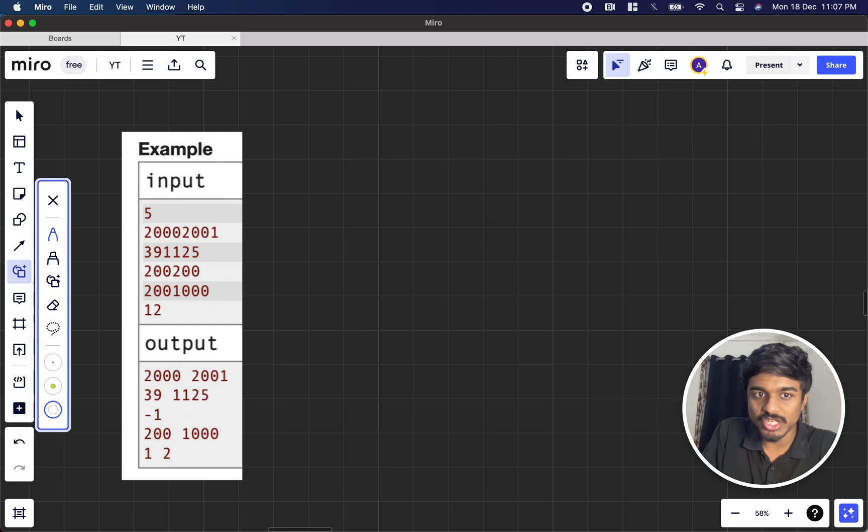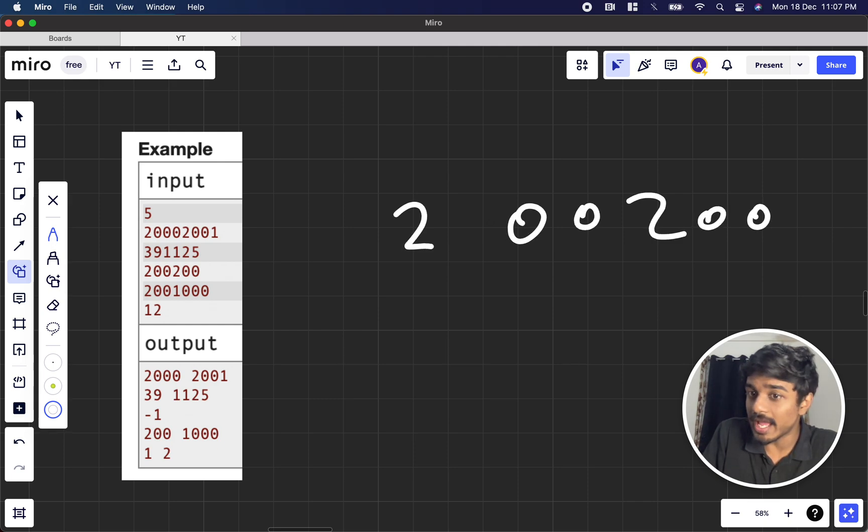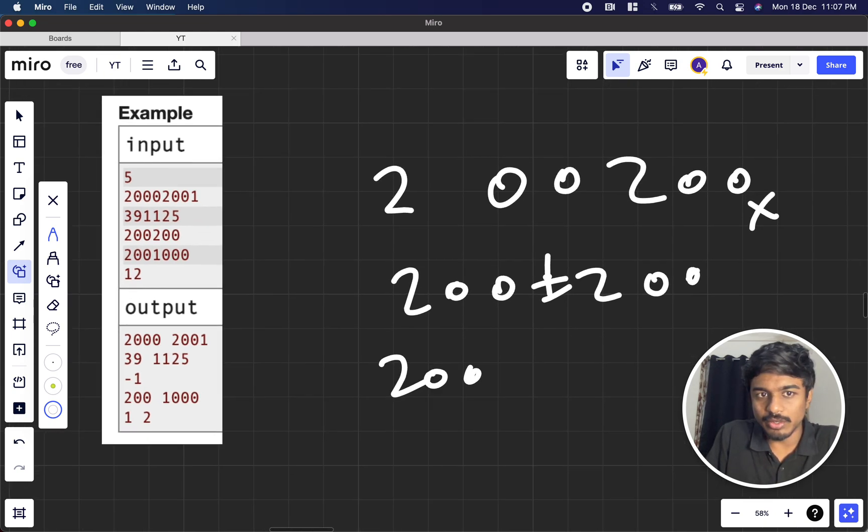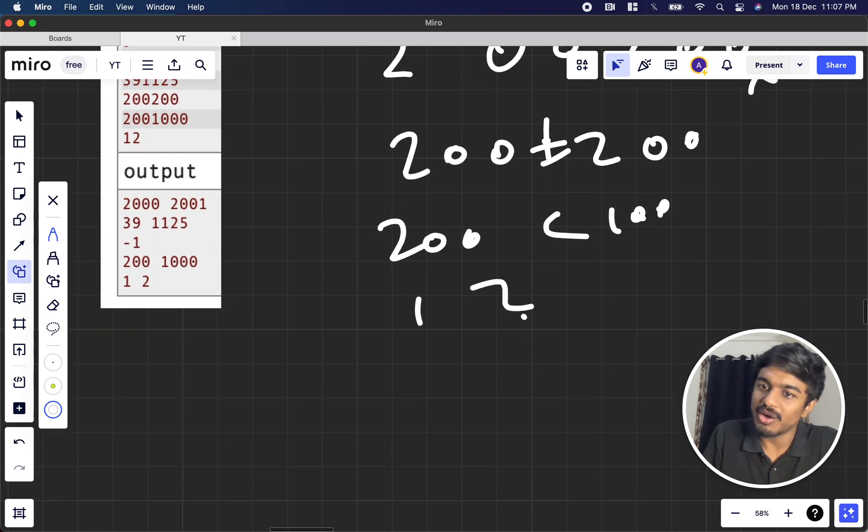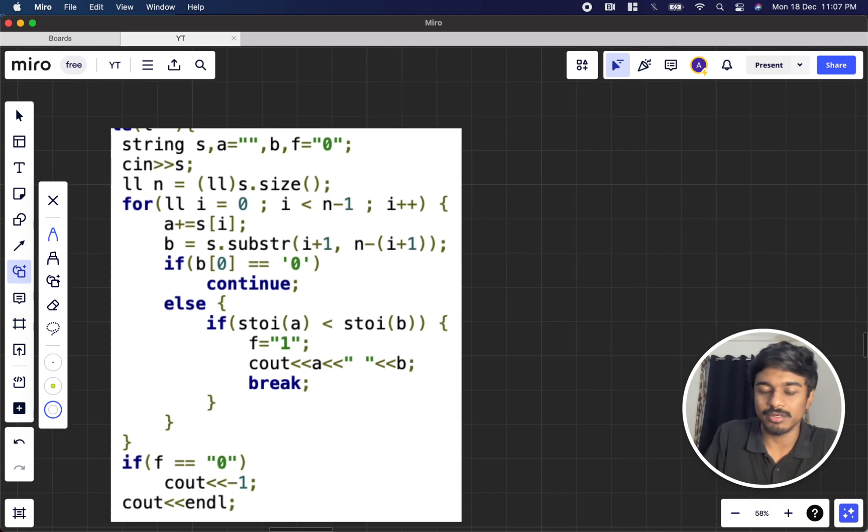How do you split it? You can split straight away here. For 39 1125, you can do 39 and 1125 as a possible answer. 200 200 you can never split, right? 200 and 200 is not allowed because they're equal. 200 000 is obviously invalid here, and for 12 you can split to 1 and 2.